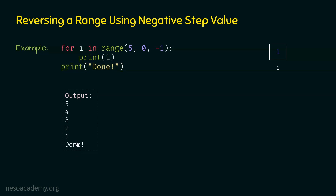The final output is 5, 4, 3, 2, 1, and then 'done'. In this way, we can reverse a range of numbers using negative step value. The concept is simple: start value is 5, then 5 minus 1 gives 4, then 4 minus 1 gives 3, then 3 minus 1 gives 2, and the last value is 1. Zero must not be included in the result — this is what we need to remember.